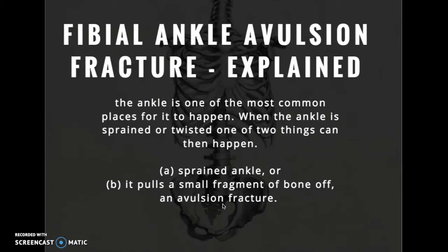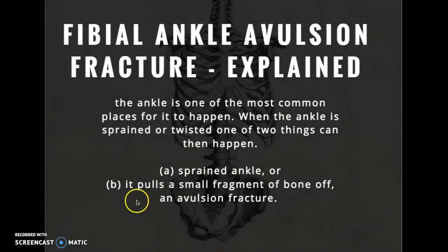When the ankle is sprained or twisted, a force is passed through the surrounding ligaments and tendons, and when that happens, one of two things can occur. Either the ligament or tendon tears, resulting in a sprained ankle, or the ligament or tendon pulls so hard from its bony attachment that a small piece of bone comes off — in this case, from the fibula.